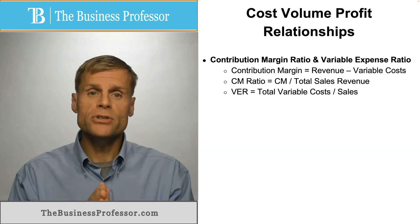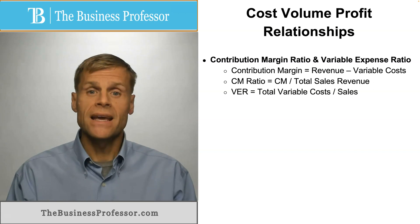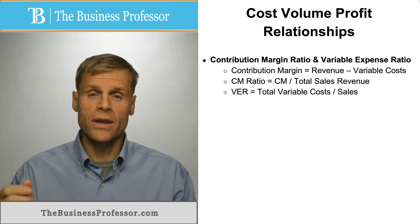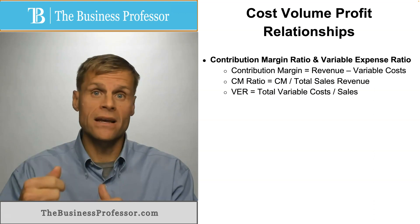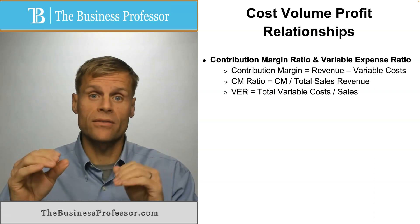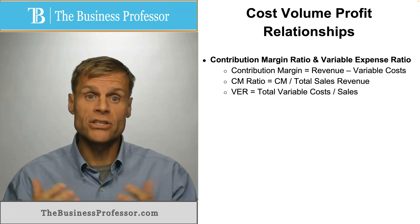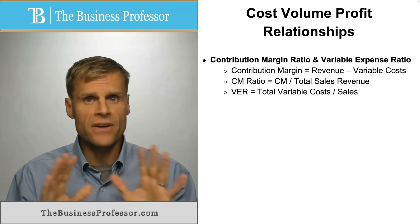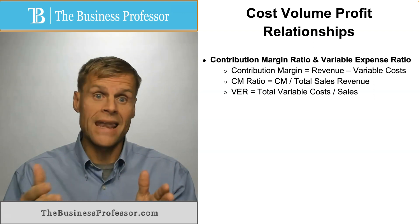Starting with contribution margin and variable expense ratio: contribution margin is simply your revenue minus your variable costs. Variable costs are the costs you incur anytime you sell an item, a unit, or an hour of service — the more you sell, these costs go up commensurately. So revenue minus variable cost equals contribution margin, a very important concept for the rest of the cost-volume analysis.